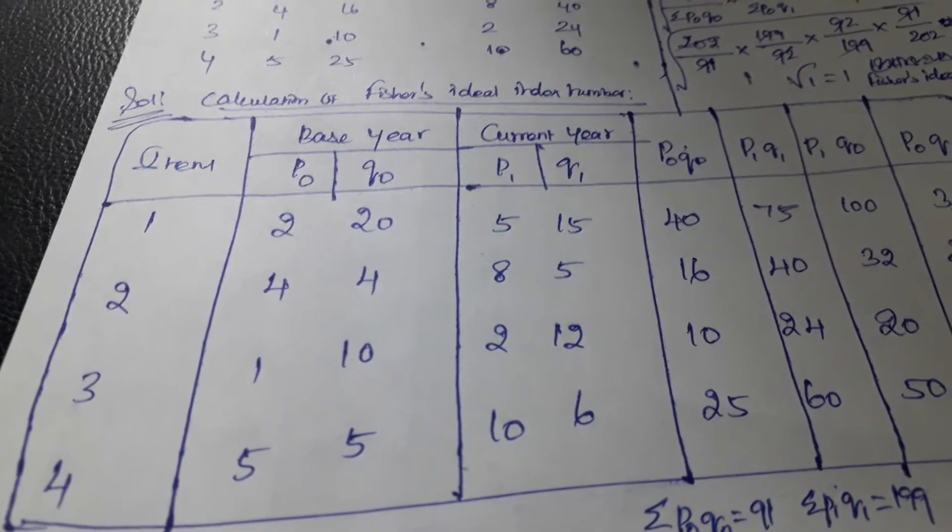In the same way, we also need to find the current year quantity values. Then we need to calculate the products: P0Q0, P1Q1, P1Q0, and P0Q1. These columns are required to calculate Fisher's Ideal Index Number.